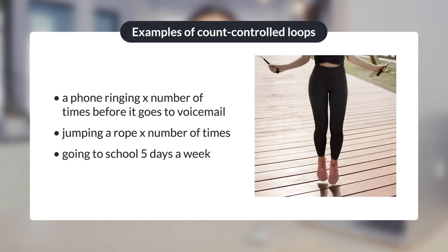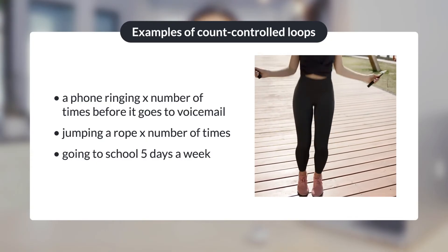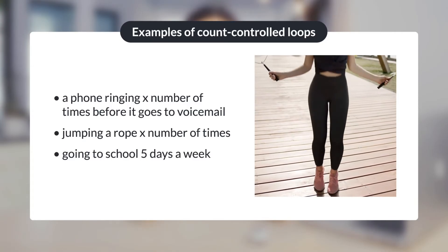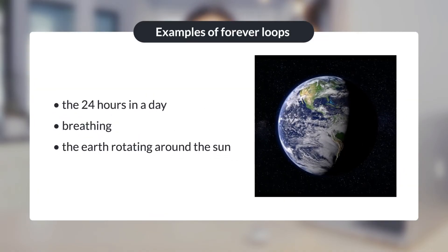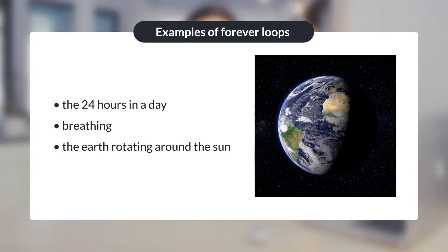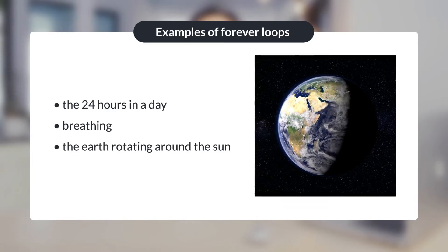Now let's think about loops or sequences that repeat in real life. Examples of count-controlled loops are a phone ringing a set number of times before it goes to voicemail, jumping rope a set number of times, or going to school five days a week. Examples of forever loops are 24 hours in the day, breathing, and the earth rotating around the sun.